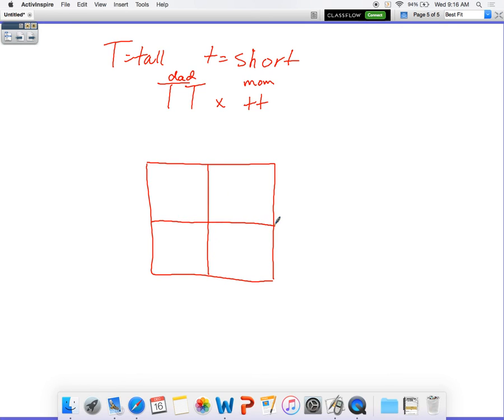So we create our Punnett square. Our dad will put on the side, so we're going to put him down here. So big T, big T. Remember, it's one letter per row. And then our mom will put on top, little t, little t. And then we're going to fill in our boxes. Our capital letter always comes first. We're going to do the last row. Big T, little t, big T, little t.